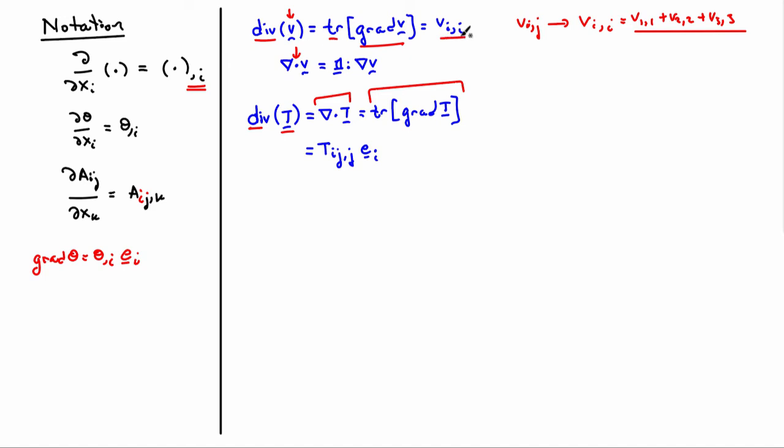You'll notice that when we take the divergence of a vector field, we get a scalar. When we take the divergence of a tensor field, we get a vector. Taking gradients promotes things from scalars to vectors and higher order tensors, while taking divergence reduces them. These are just definitions to be aware of.